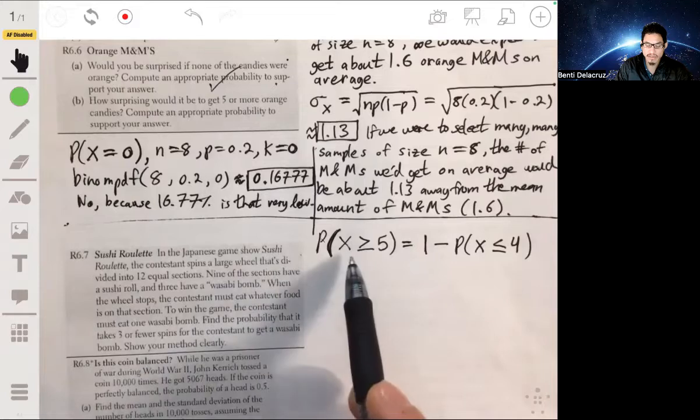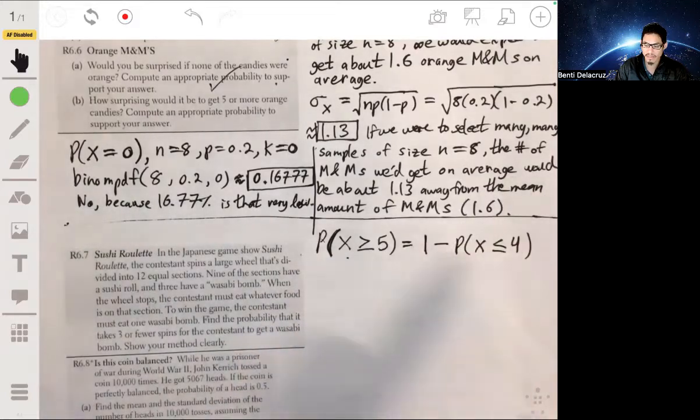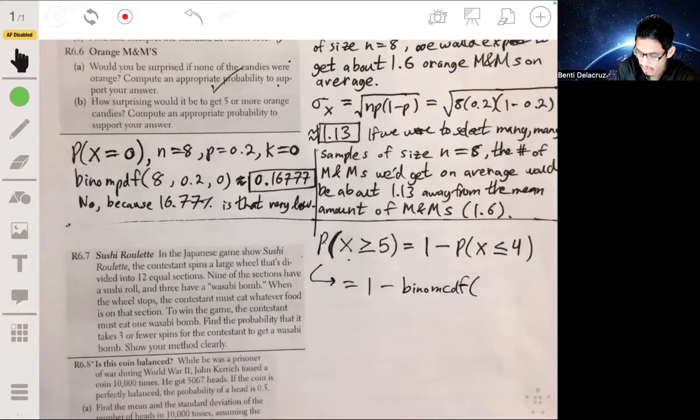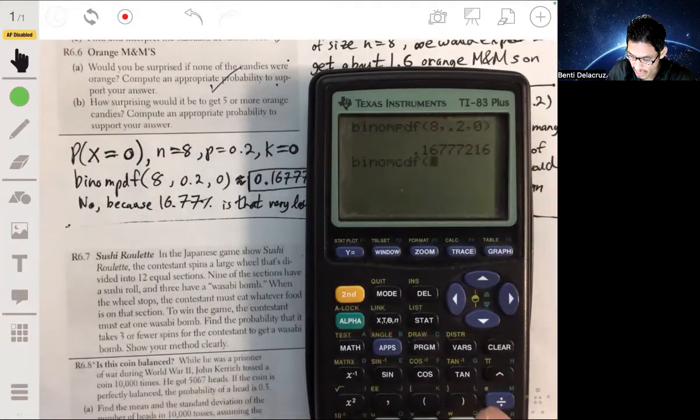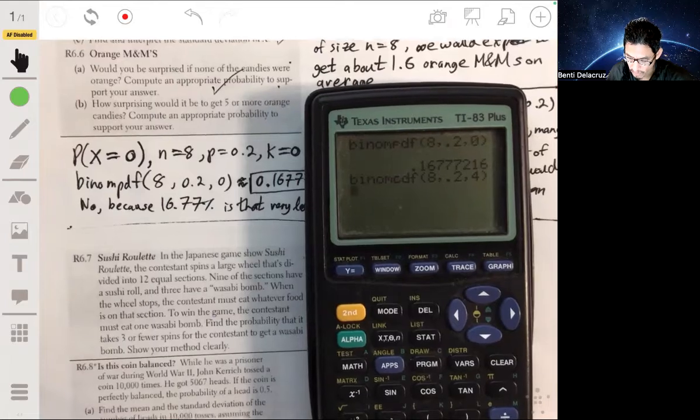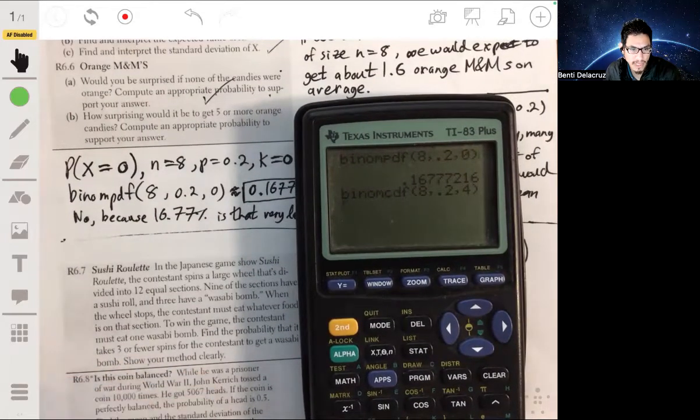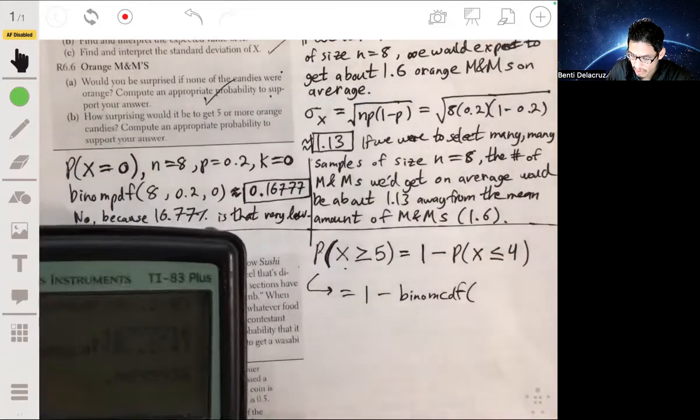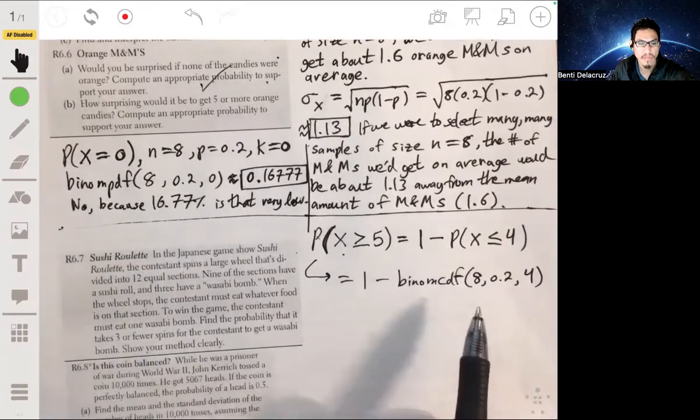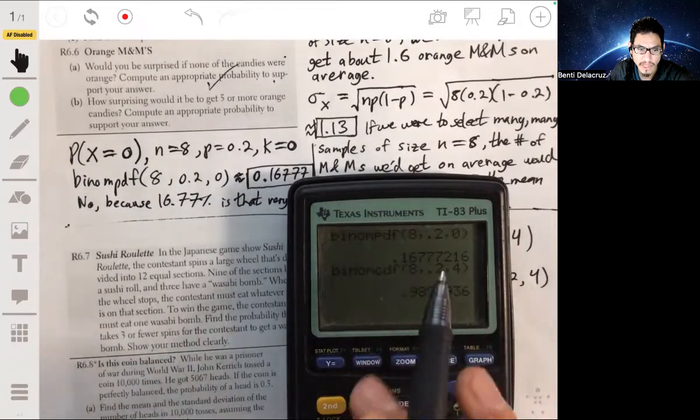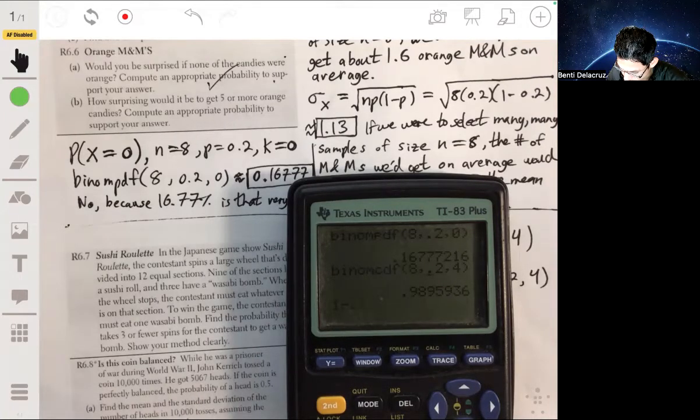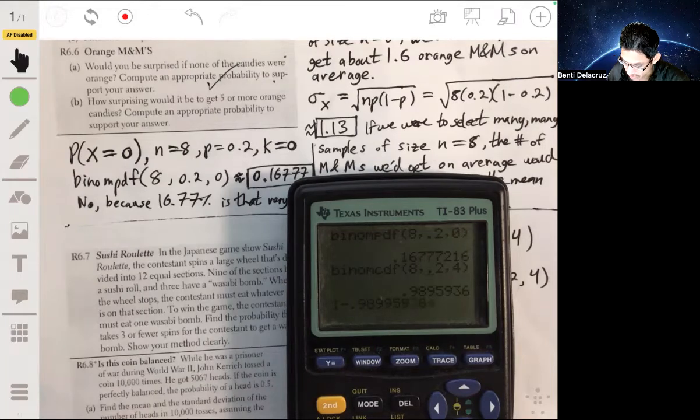Your calculator can't do greater than or equal to. It calculates less than or equal to. So this is one minus the binomial CDF function. Same sort of deal with NPK. N is eight, P is 0.2, and K is four. Again, I have to memorize the syntax. If you have a newer one, you don't have to worry about it. But if you enter it all in one shot, it would look like this. If you do it separately, you would get the binomial CDF. This probability would be about 0.989. Then you subtract that from one. You can already see it's going to be like virtually 1%.